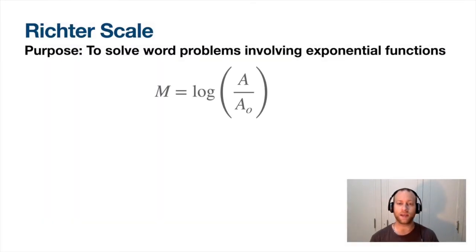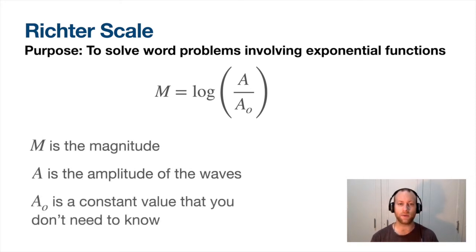Richter scale - you saw one in the last one of the sections 8.3 part something. This is the equation you're going to get on the formula sheet. M is the magnitude, A is the amplitude of the waves. If you've got an earthquake, the earth moves up and down - this is a surface wave that you have. So A is going to be the amplitude, you might see this as the intensity as well. A naught is just a value you don't need to know because it's always going to cancel out.